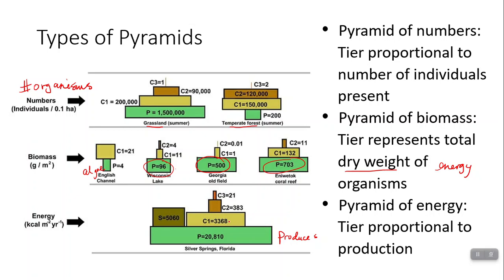Notice, though, that it's not always 10%. So, for example, 10% of the producer's energy would be 2081 kilocalories per meter squared per year. So notice that we have actually a little more energy getting passed from producers to consumers. Then as we go from primary consumers to secondary consumers, follows the 10% rule approximately.